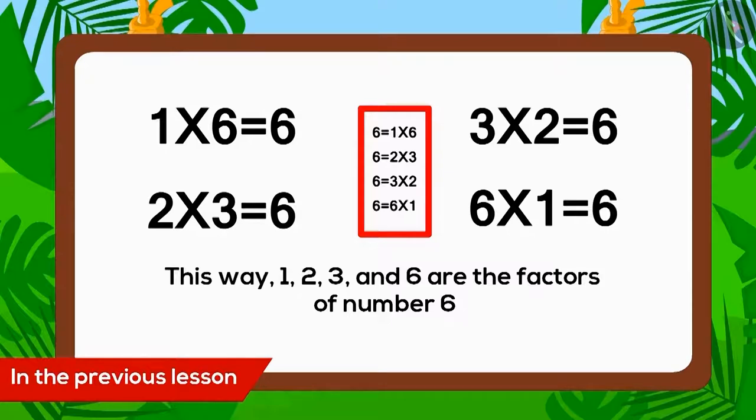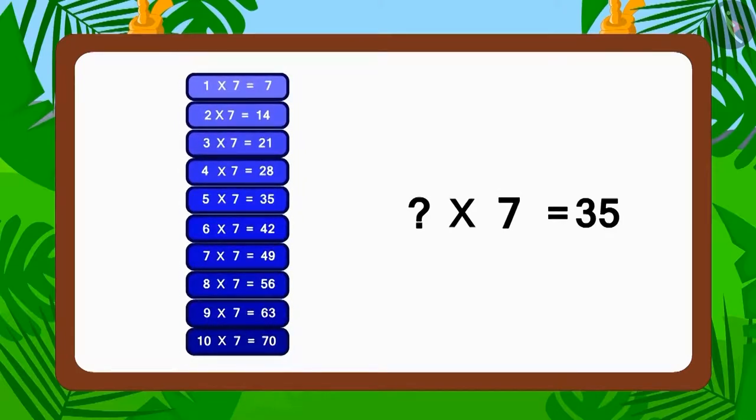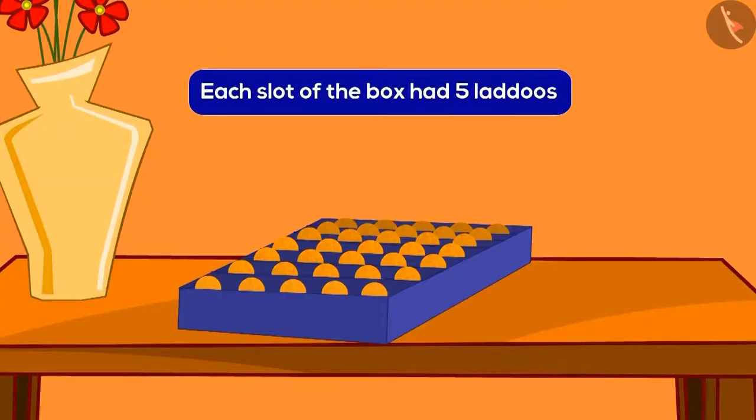And find the answer to this puzzle? Well, you just have to find out when does thirty-five appear in the table of seven. So, what multiplied with seven is thirty-five? Five multiplied with seven. Each slot of the box had five ladoos.